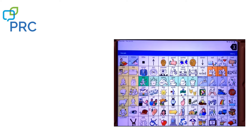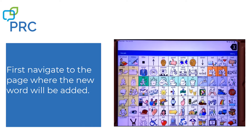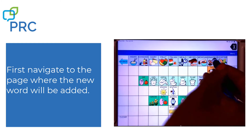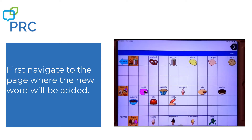First thing we need to do is navigate to the location where you want your new word to be. I'm going to add the word raisins to my snack page. So in order to do that, I'm going to go to Apple and Snack. And this is where I want the picture of raisin to be.